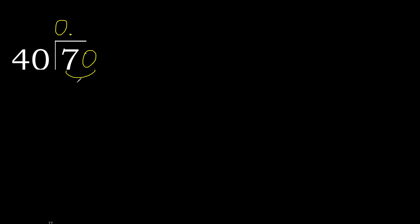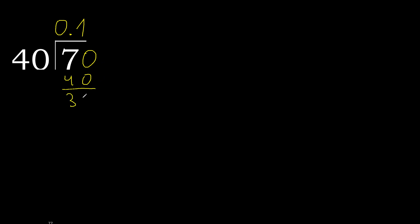70 is not less than 40, so we work with 70. 40 multiplied by which number is nearest but not greater? 40 multiplied by 2 is 80 — that's greater. 40 multiplied by 1 is 40 — it is not greater. Subtract: remainder is 30. There is no next number, so complete with 0. Write 0 point.